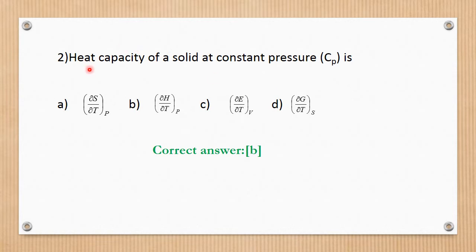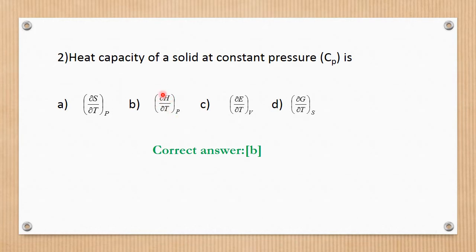Question number 2. The heat capacity of a solid at constant pressure, Cp, is defined as the variation of enthalpy with respect to temperature at constant pressure: Cp = dH/dT at constant pressure. The correct answer is B.